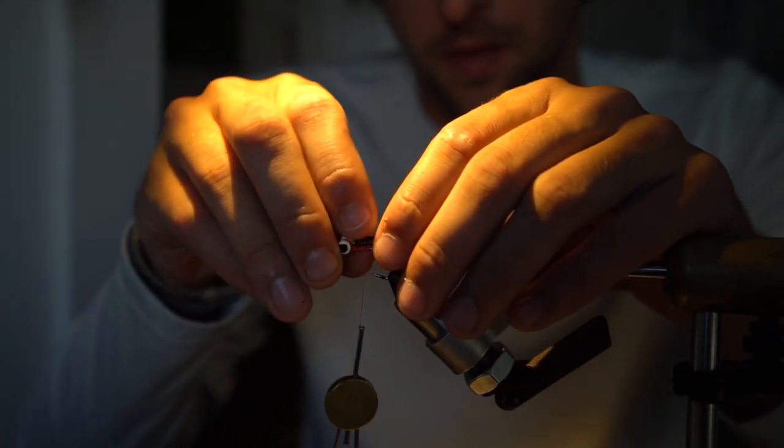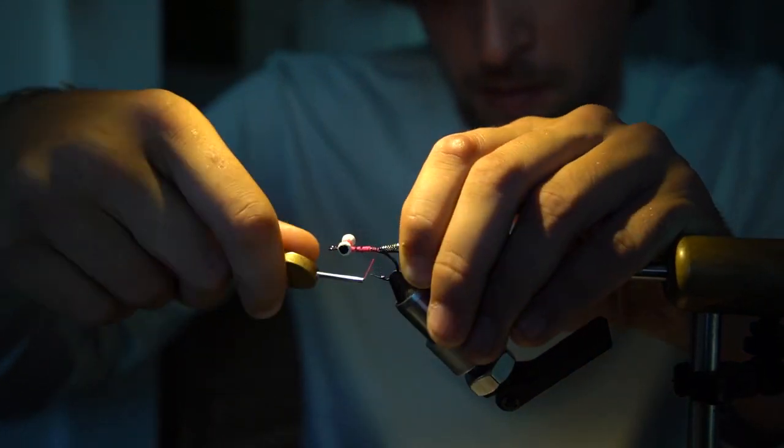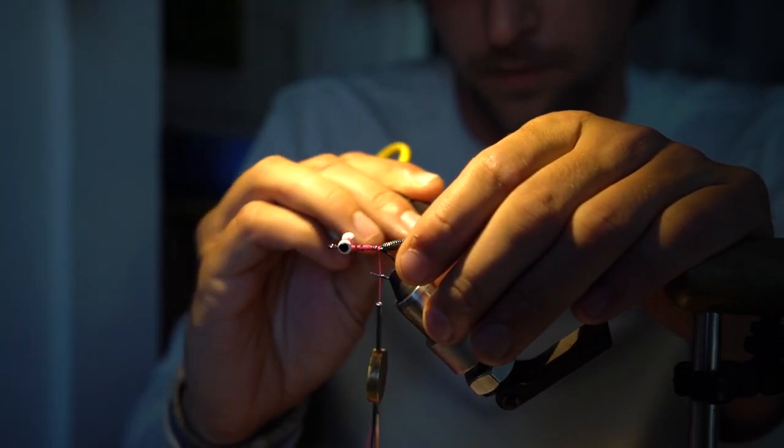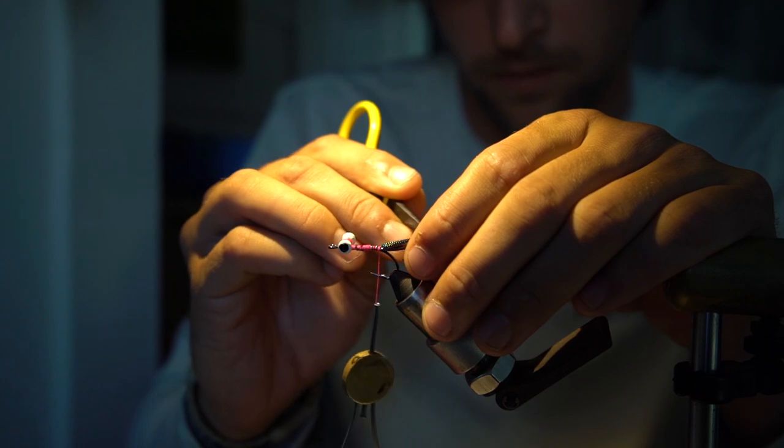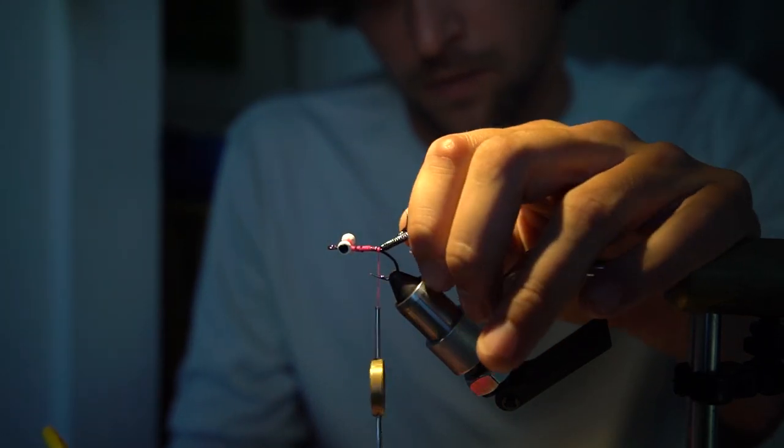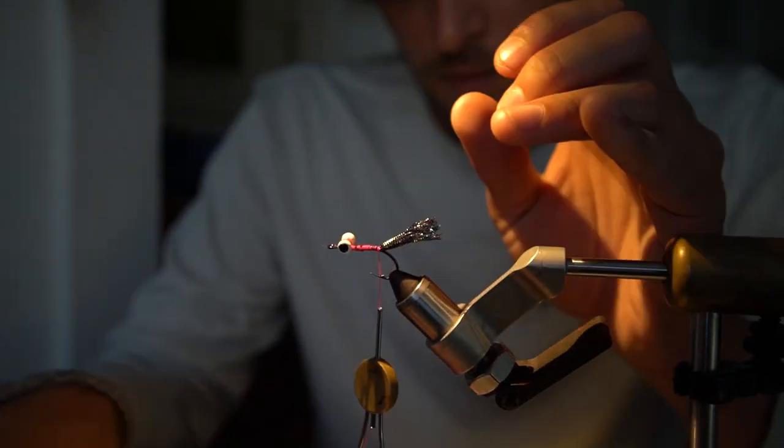Next you're going to advance your thread back to about the bend of the hook and you're going to tie in your first material which is some black mylar tubing. This is going to give it a little bit of extra weight on the belly and when you pick it out with your scissors like I'm doing right here it gives you this really crazy bundle of flash that kind of hangs out behind the fly and helps keep the tail from fouling.